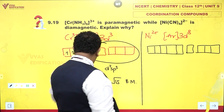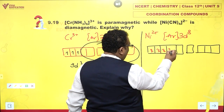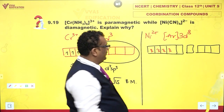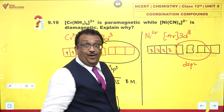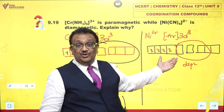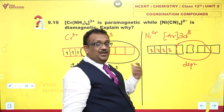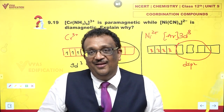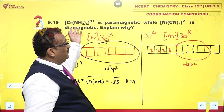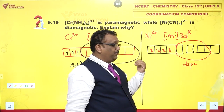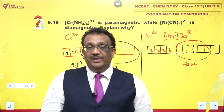For nickel with d8 configuration - one, two, three, four, five, six, seven, eight - cyanide ions wield a lot of power and force pairing. The electrons are pushed in and forced to pair up, leaving dsp2 hybridization and square planar geometry. Since cyanide is a strong field ligand and the d8 configuration of nickel is forced to pair, all unpaired electrons are eliminated. With no unpaired electrons remaining, the complex is diamagnetic.